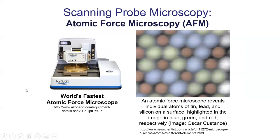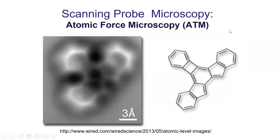One of the more common types of scanning probe microscopy is called atomic force microscopy, or AFM. Here's one — apparently the world's fastest. You can see the colorized image on the right showing different types of atoms. The reason I'm mentioning AFM is that it's the type almost universally used for biological specimens.